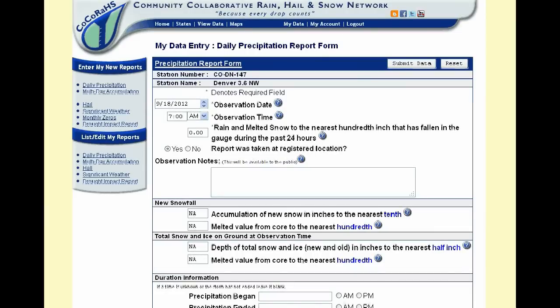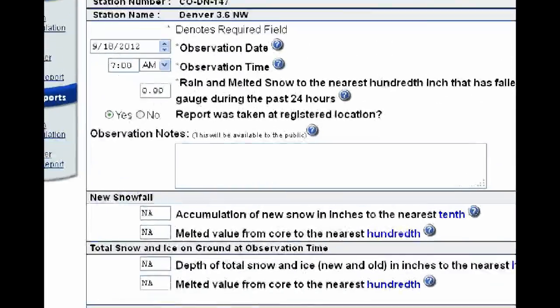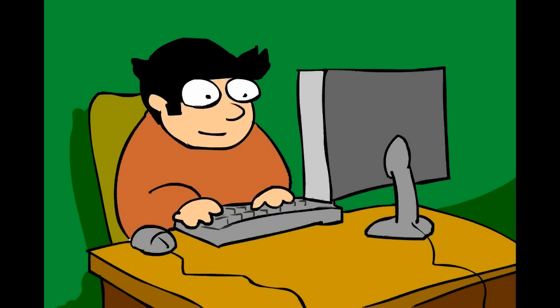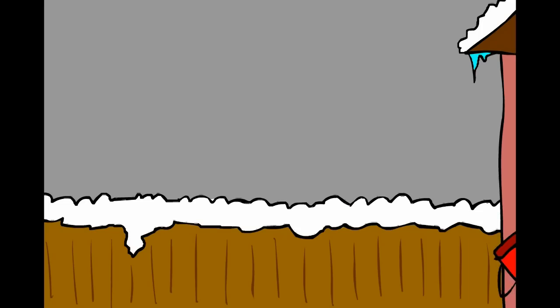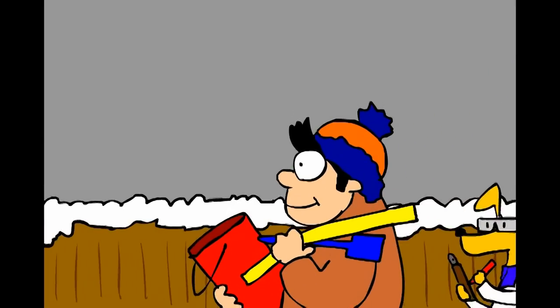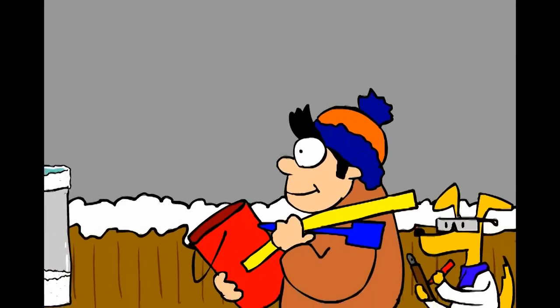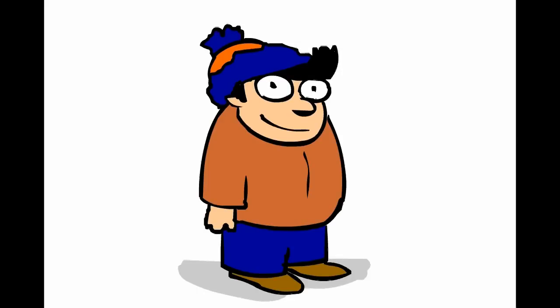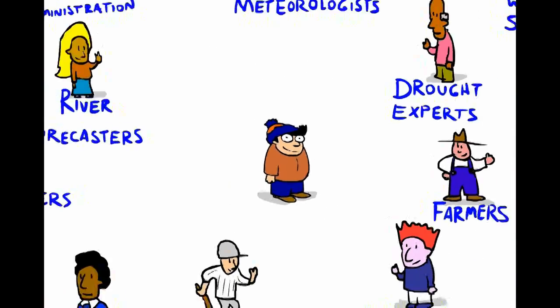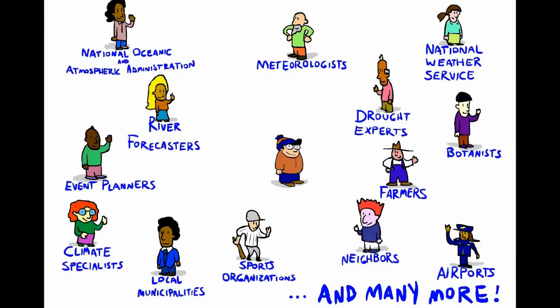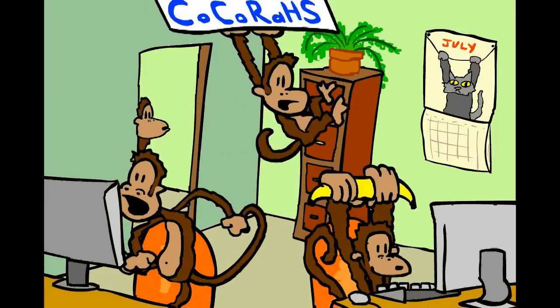When in doubt, or even if you are certain, be sure to make use of the observation notes section on your report form. A well articulated note can really help put your measurement into context. The best way to learn from these difficult situations is by doing. Experience is the best teacher and it can help you to achieve higher quality and more accurate measurements. Not only does that benefit you, but it also benefits the people that depend on the data. So strive to measure consistently and accurately. And if you ever have a question, know that we are just an email away and we will do our very best to help.